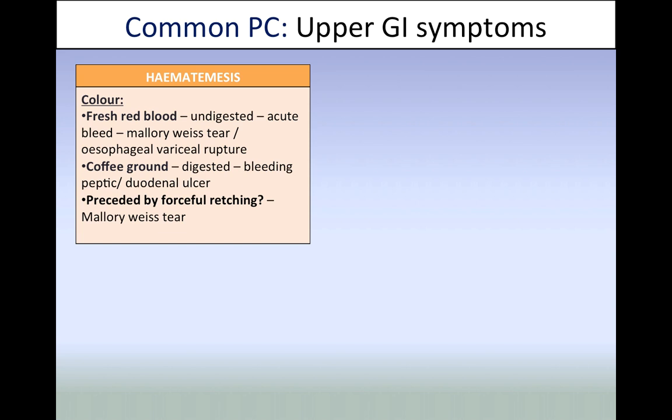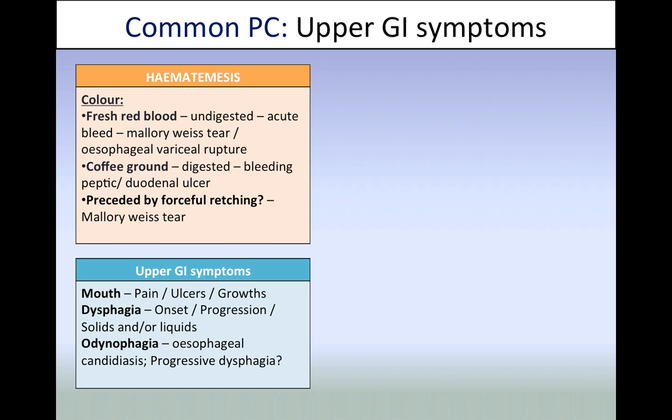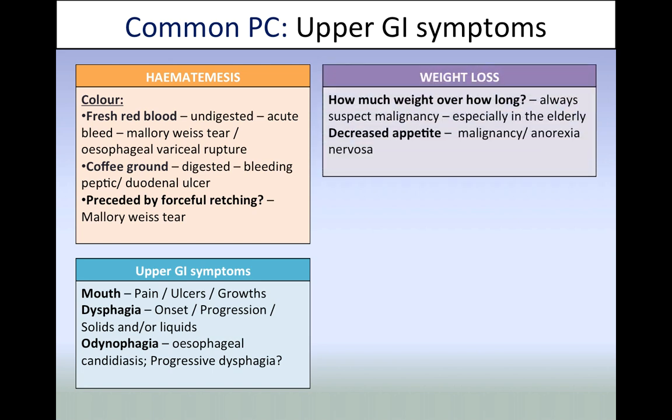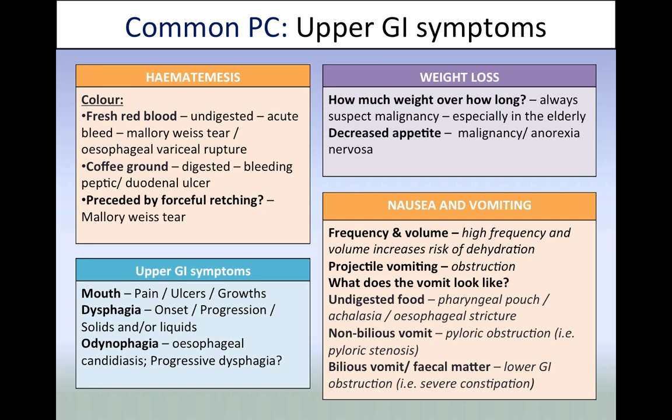Some important upper GI symptoms include haematemesis — find out about the colour and consistency. Fresh red blood can indicate a Mallory-Weiss tear or variceal rupture, whilst coffee-ground-coloured blood suggests digested blood, which can indicate ulcers. Patients may present with difficulty swallowing due to papular lesions in the mouth or physical restriction. Unintentional weight loss should always be questioned due to malignancy — how much have they lost, has appetite changed, and is it purposeful? Nausea and vomiting are incredibly common — go into detail about the characteristics, frequency, and volume of vomiting, and analyse the content: is it bilious? Is there undigested food? All this gives clues to the cause.